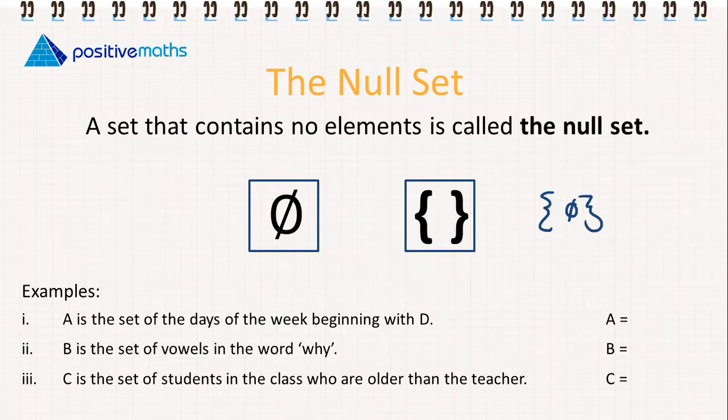Let's look at some examples. A is the set of days of the week beginning with D, an example of the null set. B is the set of vowels in the word 'why', again has no elements, so it's the null set.